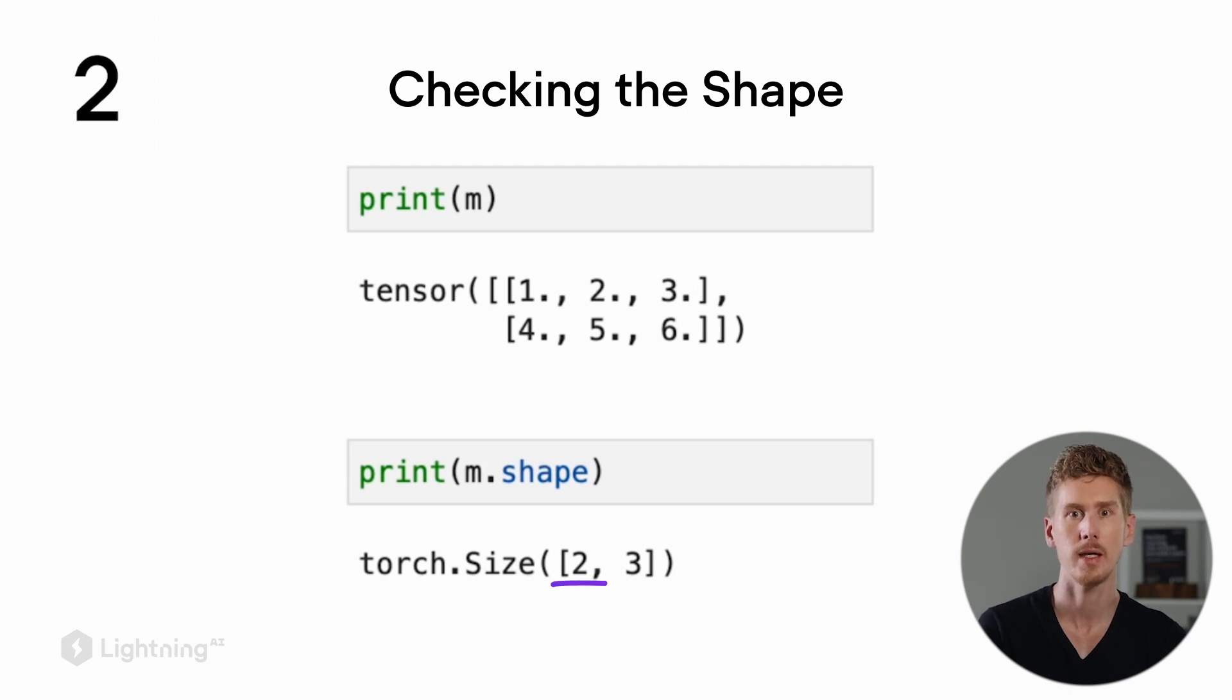If we have a two-dimensional tensor like here, the first number refers to the number of rows, and the second number refers to the number of columns. So here we have a 2x3 dimensional matrix.